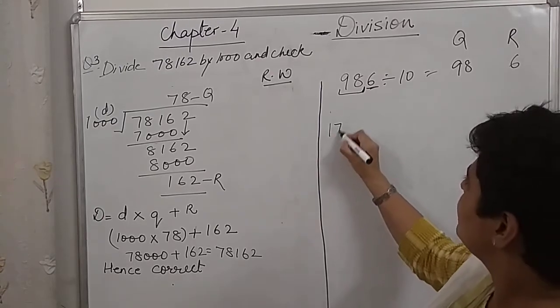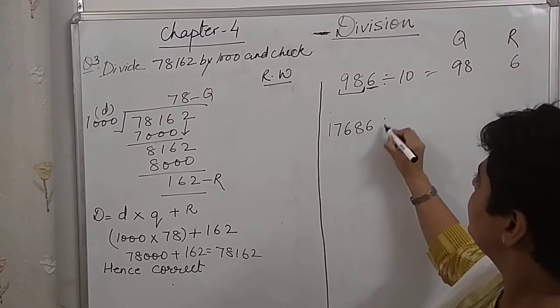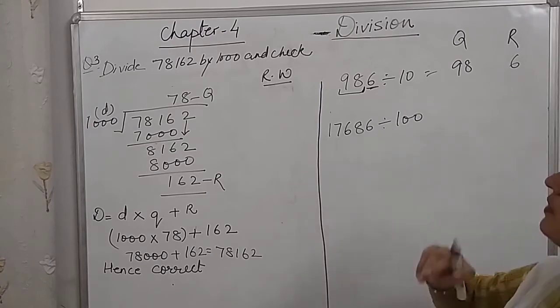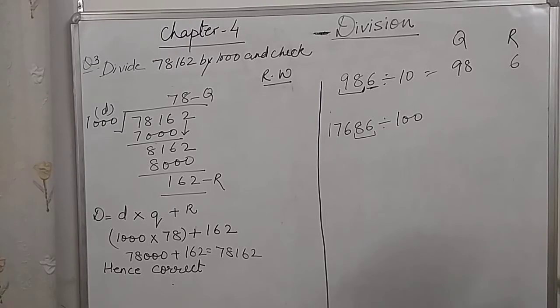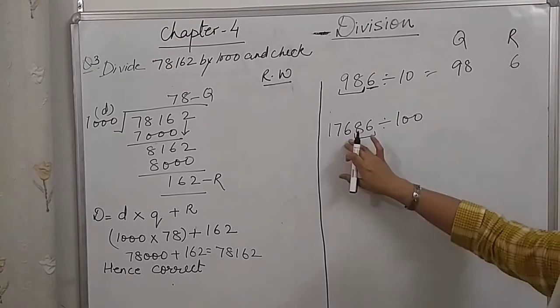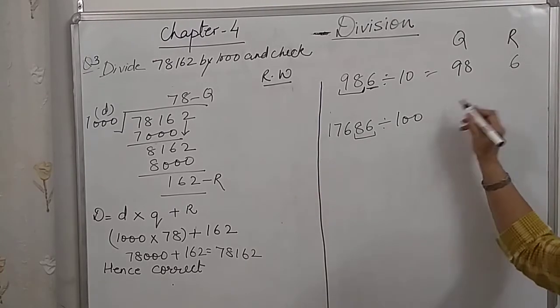Let's take another example. Divided by 100. 100 has got how many 0's? 2. So, the last 2 digits will be the remainder and the digits that are left will become the quotient.